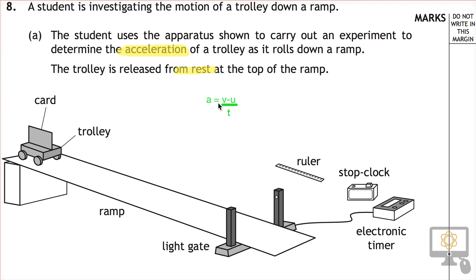So those are the three measurements that we would need to make: the final speed, the initial speed, and the time in between those two measurements. The final speed is measured here with the light gate, and the initial speed is measured at the top.